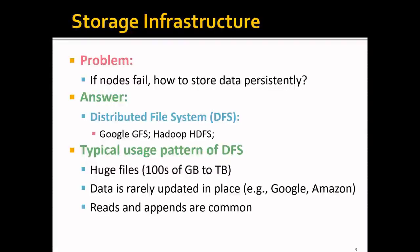Before getting into details, let's look at a typical usage pattern of distributed file systems. Usually you have very large files — hundreds of gigabytes to terabytes — and this data is rarely updated in place. For example, Google fetches web pages and stores them but rarely updates them in place. Similarly, Amazon appends product pages to existing large files but rarely modifies them. So there are many read operations and many append operations, but update operations are relatively rare.